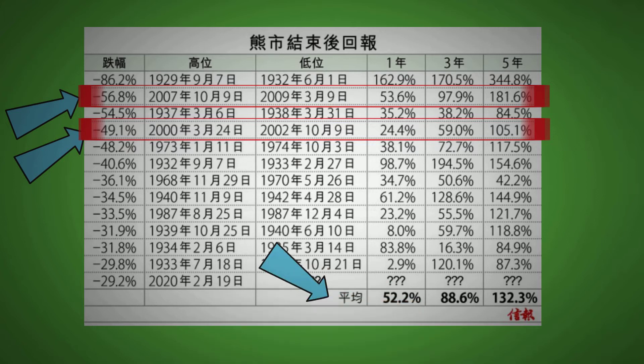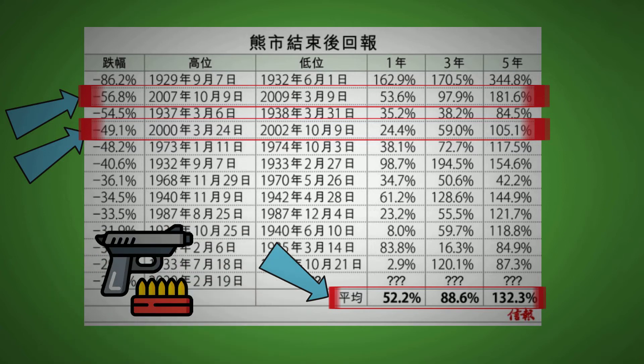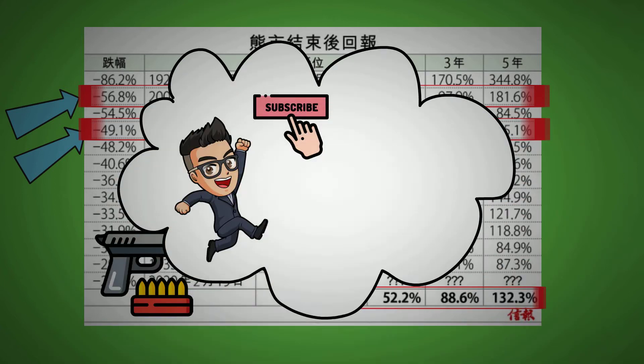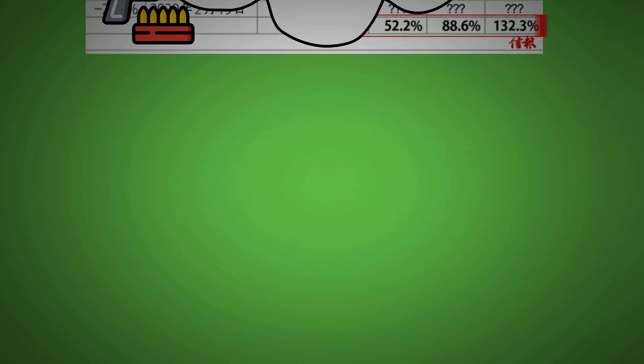At the bottom of the chart, it shows the average return from bear market bottoms. 1 year is 52.2%, 3 year is 88.6%, 5 year is 132.3%. Are you locked and loaded for this once in a decade opportunity? Just as a reminder, do consider subscribing and dropping a like on the video. It really motivates me to create better content more often.